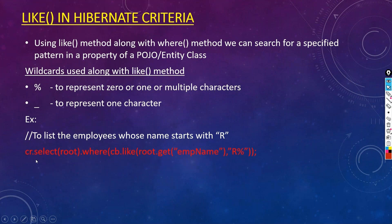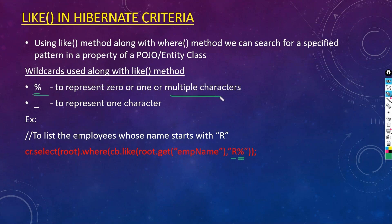To list employees whose name starts with R: cr.select(root).where(cb.like(root.get("empName"), "R%")). Here R is the first character and the percent wildcard handles any subsequent characters. This will pull out all records from the employee_info table whose name starts with R.